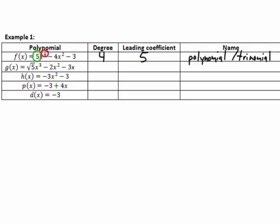Working our way down the remaining polynomials: we see degree 3. The highest exponent on h(x) is degree 2. For p(x), remember there's an implied 1 on x, so it's degree 1. For d(x), though no x is shown, we could write it as x^0 — remember x^0 equals 1 — so that's degree 0. The leading coefficients are: g(x) is √5, h(x) is −3, p(x) is 4, and d(x) is −3.